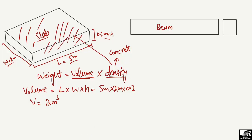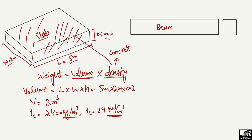Now, the density of concrete used in this slab is 2400 kilograms per cubic meter, or equivalently 24 kilonewtons per cubic meter. We have both units available. In civil engineering, we mostly want to find the weight in kilonewtons per cubic meter, but I will solve using both methods.